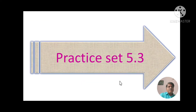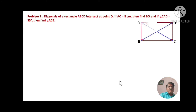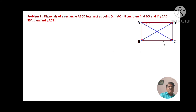Let us start with Practice Set 5.3. Problem number 1: Diagonals of a rectangle ABCD intersect at point O. If AC is 8 centimeters, then find BO. And if angle CAD is equal to 35 degrees, then find angle ACB. You can see in the adjoining figure: A, B, C, D with diagonals AC and BD intersecting at point O. So let us start to solve this. We have to find segment BO and angle ACB.